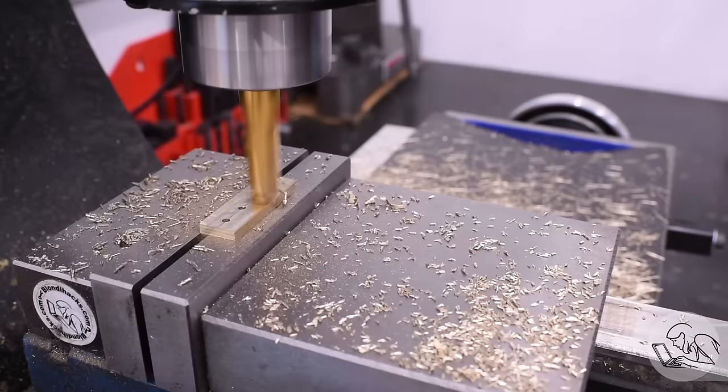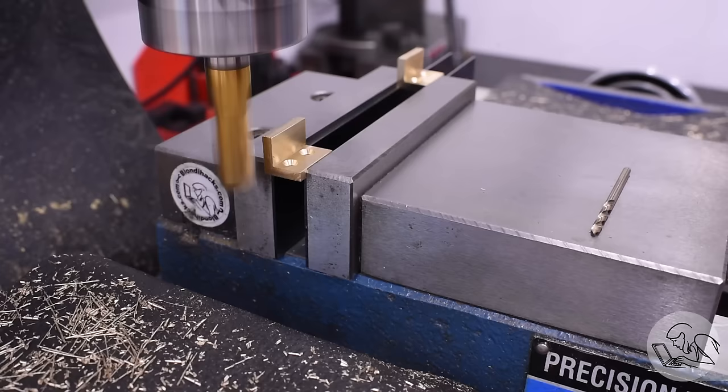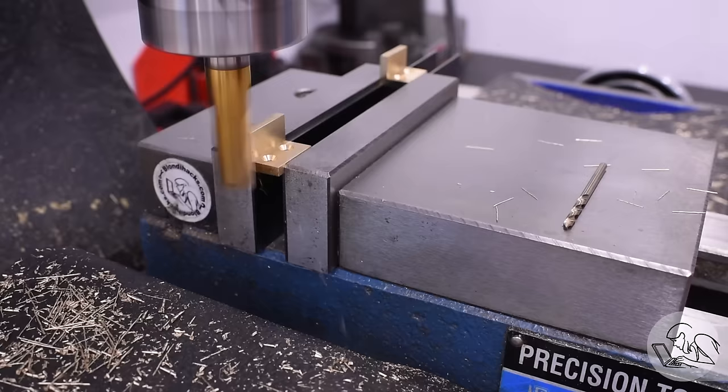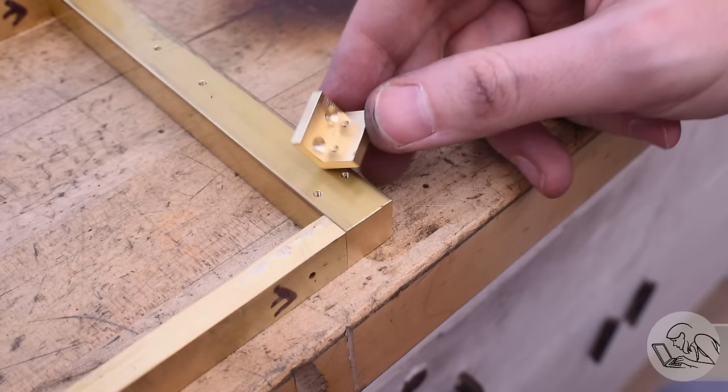Those were cut apart on the bandsaw and now I need to mill the ends square and to dimension. Once again, the holes are my reference here. So I put them in the vise like so. I lined up the drill on one of the holes to get my distance to mill the side clean and to dimension. And then I did the same thing with the other piece on the other end of the vise. That allows me to do both pieces at the same time and the pieces are balancing the vise jaws for me. Then I had to flip them around and do the same thing on the other ends, of course.